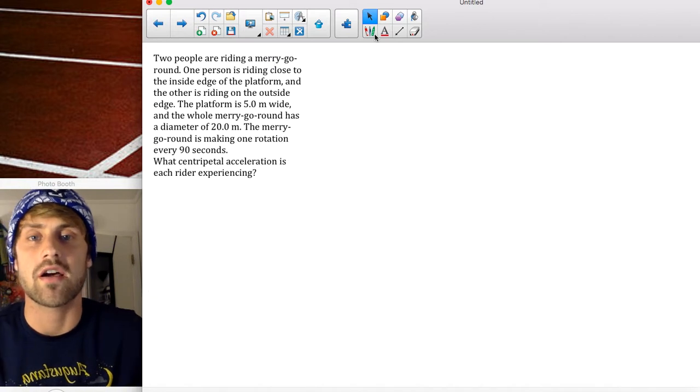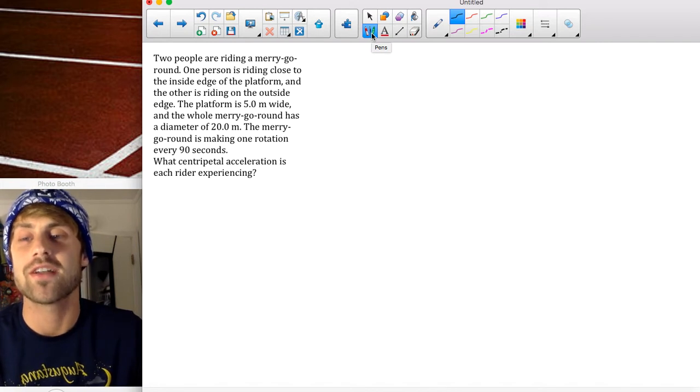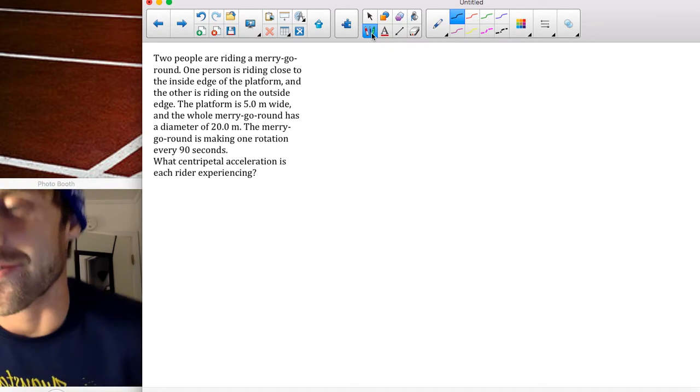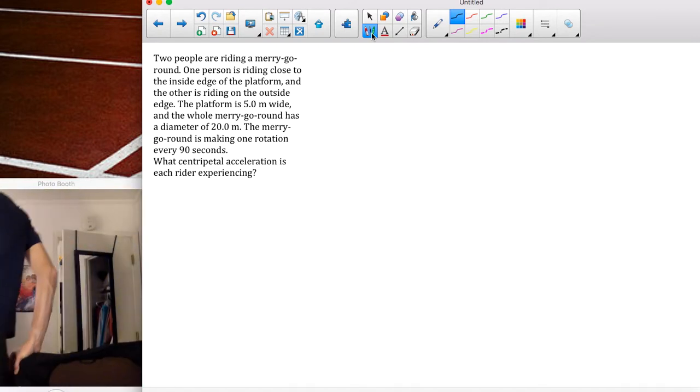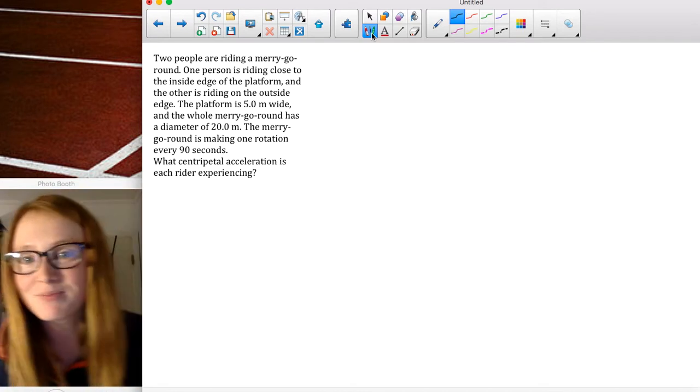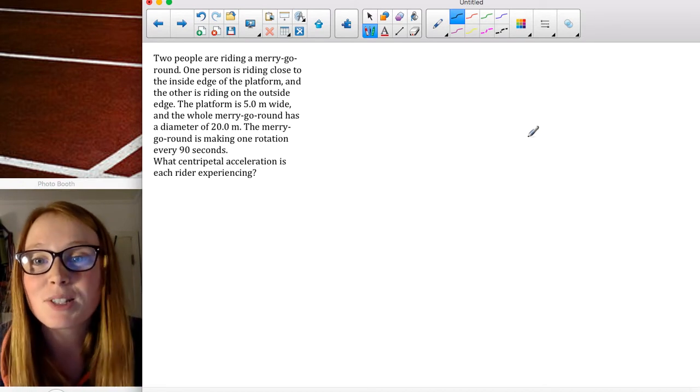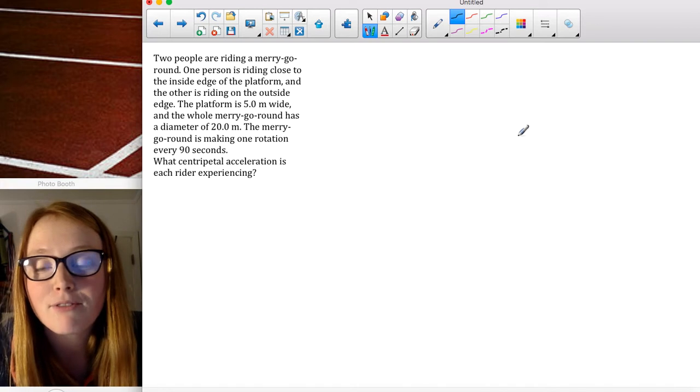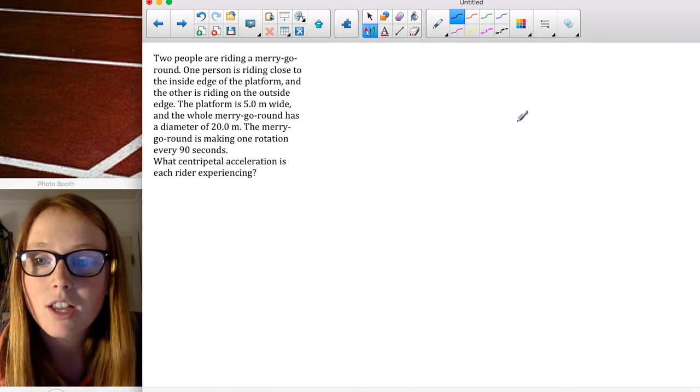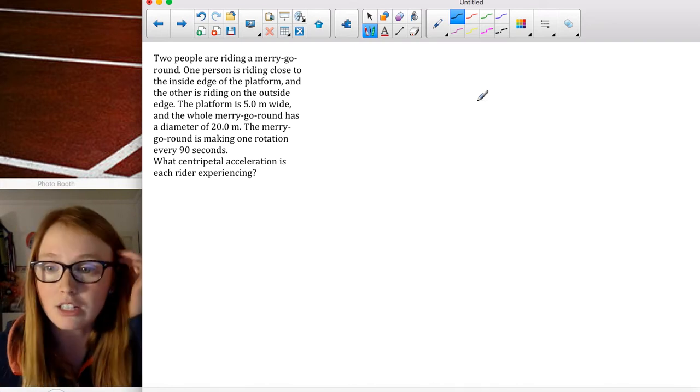Our second problem for today, we actually have a special guest for you. It is her birthday tomorrow, and she is going to help you solve this problem. She says today for you guys watching this video, tomorrow for me right now. So, Grace Rance will do this next problem for you. Okay, this problem says two people are riding a merry-go-round. One person is riding close to the inside edge of the platform, and the other is riding on the outside edge. The platform is 5 meters wide, and the whole merry-go-round has a diameter of 20 meters. The merry-go-round is making one rotation every 90 seconds, and we would like to know what the centripetal acceleration of each rider is.